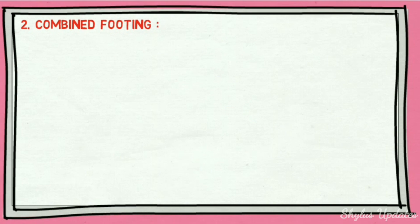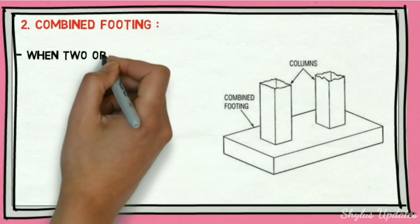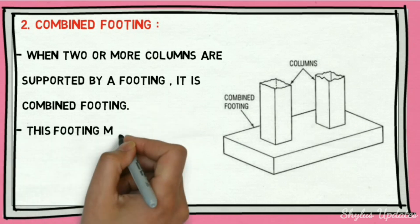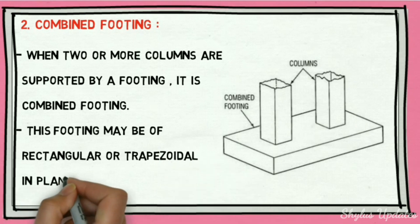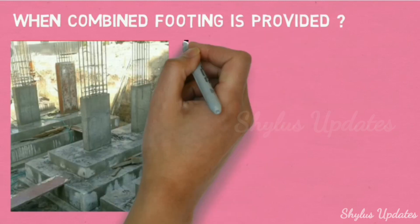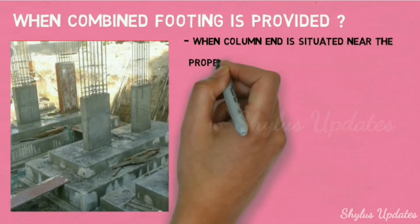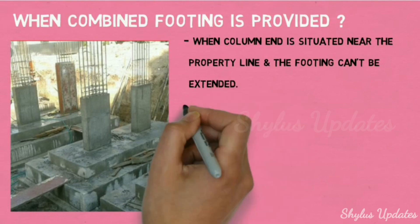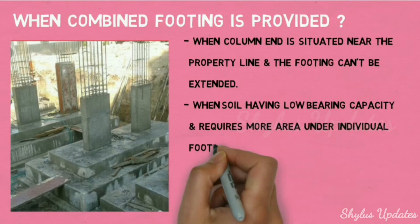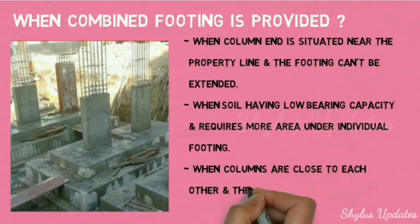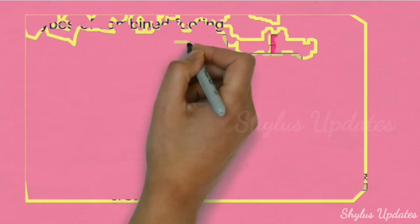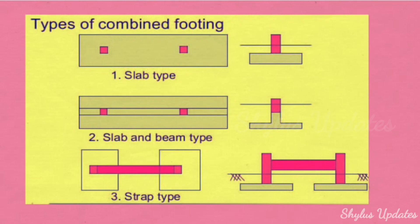Combined footing: when two or more columns are supported by a single footing, it is called a combined footing. This footing may be rectangular or trapezoidal in plan. Combined footing is provided when a column is situated near the property line and the footing cannot be extended, when soil has low bearing capacity requiring more area under individual footing, or when columns are close to each other and their individual footings may overlap. Types include slab type, slab and beam type, and strap type.